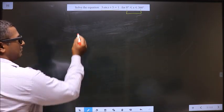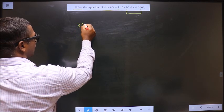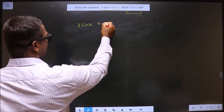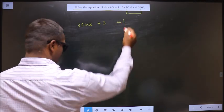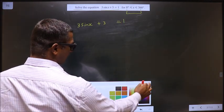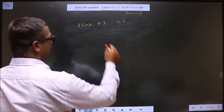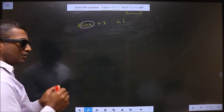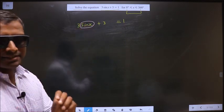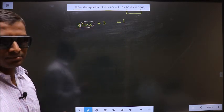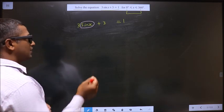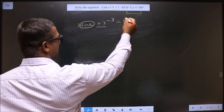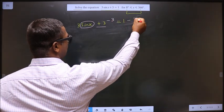The given equation is 3 sin x plus 3 equals 1. First, you have sin x, so you should make sin x the subject. To do that, first remove plus 3 — to remove plus 3, you subtract 3 on both sides.